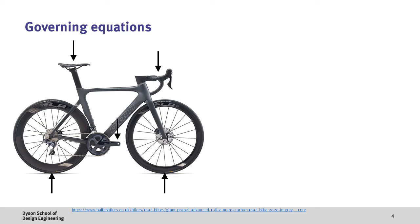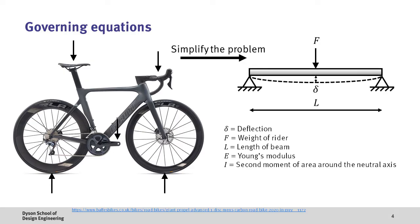If we then start to analyze the stresses that are found on a typical bike the problem starts to become quite complicated. Therefore in the initial design stage we want to simplify the problem as much as possible. Here we've assumed a cylindrical rod of length L which is held at both ends. A force F which represents the rider is applied at the center of the beam which causes a deflection delta.